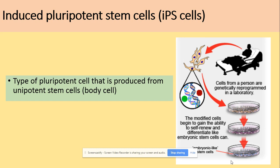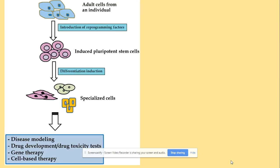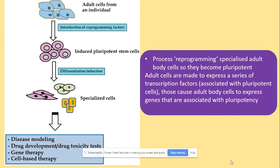Induced pluripotent stem cells are produced from unipotent stem cells. You can reprogram adult cells and induce pluripotent stem cells in organisms, for example to treat disease. The process of reprogramming specialized adult body cells makes them become pluripotent. This is done because adult cells are made to express a series of transcription factors associated with pluripotent cells, causing them to express genes associated with pluripotency so they can then be used to produce specialized cells.